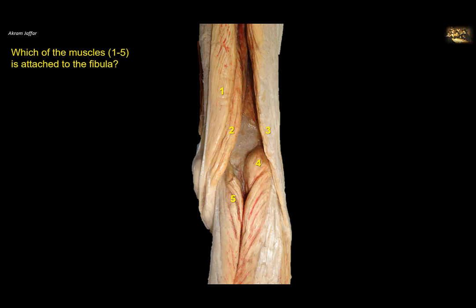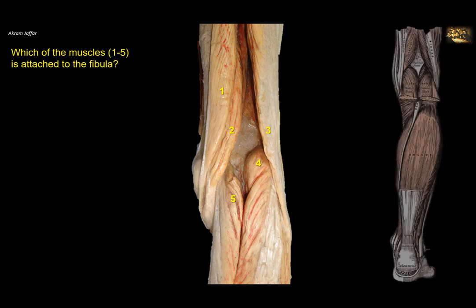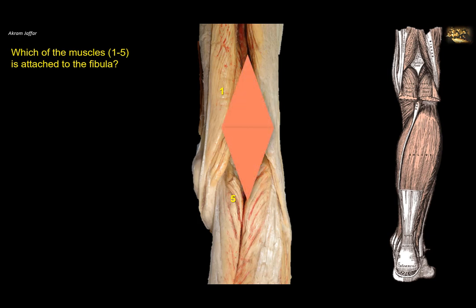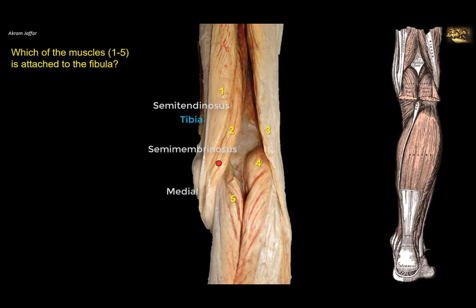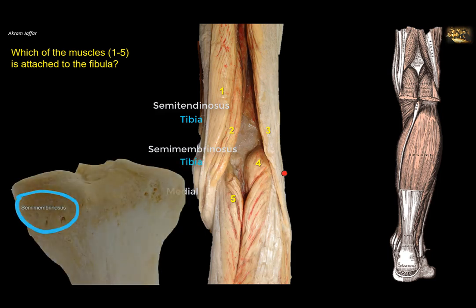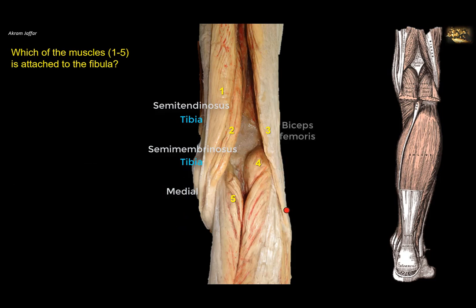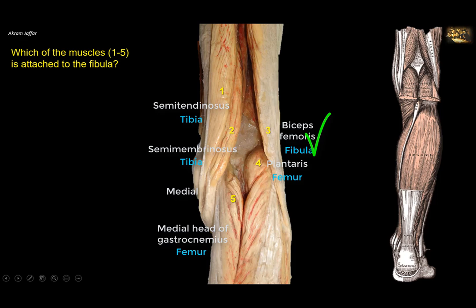Which of the muscles 1 to 5 is attached to the fibula? This is a view of the popliteal fossa — you can see the diamond-shaped fossa. The muscles forming the superior boundaries are: muscle 1, the semitendinosus, attached to the upper medial aspect of the tibia; and muscle 2, the semimembranosus, deep to it, attached to the back of the medial condyle of the tibia. On the lateral side is the common tendon of biceps femoris, which is attached to the fibula — so this is the muscle attached to the fibula. The inferior boundaries are the two heads of gastrocnemius and the plantaris, all attached to the condyles of the femur. Only number 3, biceps femoris, is attached to the fibula.